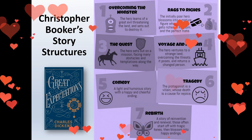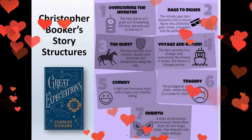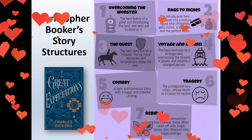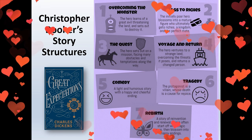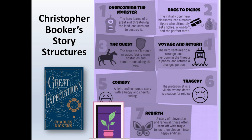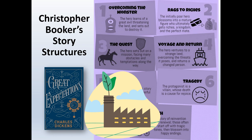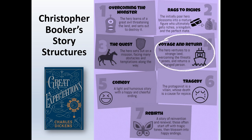Now I'd like to apply Booker's seven basic plot theory to one of my favorite novels, Great Expectations by Charles Dickens. The story revolves around the protagonist Pip — Philip Pirrip — and charts his development from a young boy to a man. He comes into a lot of unexpected wealth and his life is transformed. Although that might suggest rags to riches, I would argue a different structure applies: voyage and return.